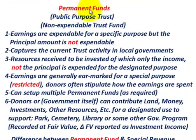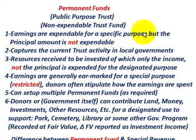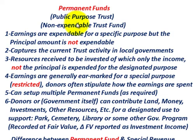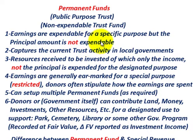Permanent funds are referred to as public purpose trusts and also non-expendable trust funds. The key characteristic is that the earnings are expendable for a specific purpose, but the principal amount is not. Donations coming into these permanent funds are generally investments, land, and so forth. You can't spend those investments — the principal amount has to stay intact. But any earnings off those donations, whether from land or investments, can be expended.